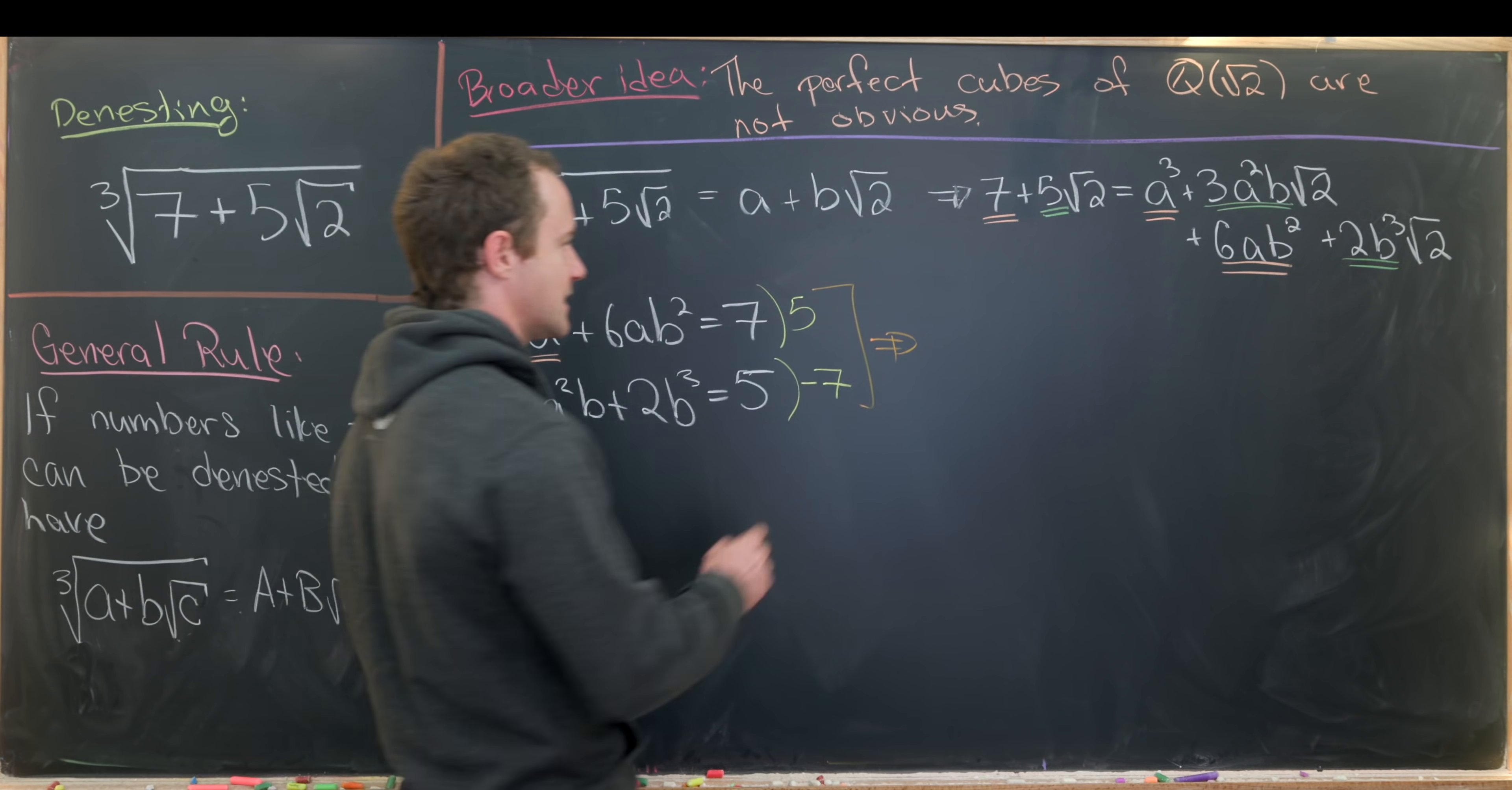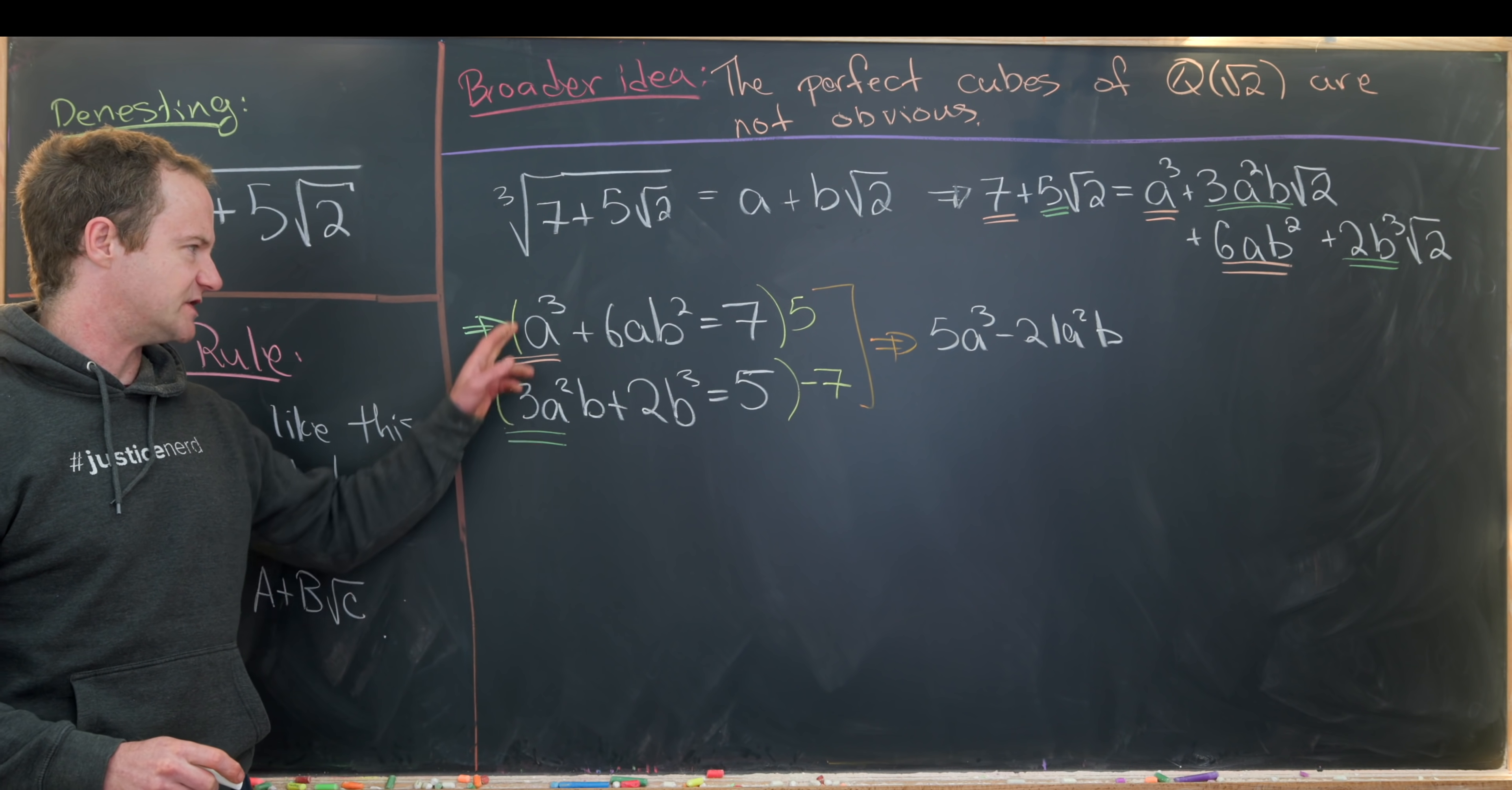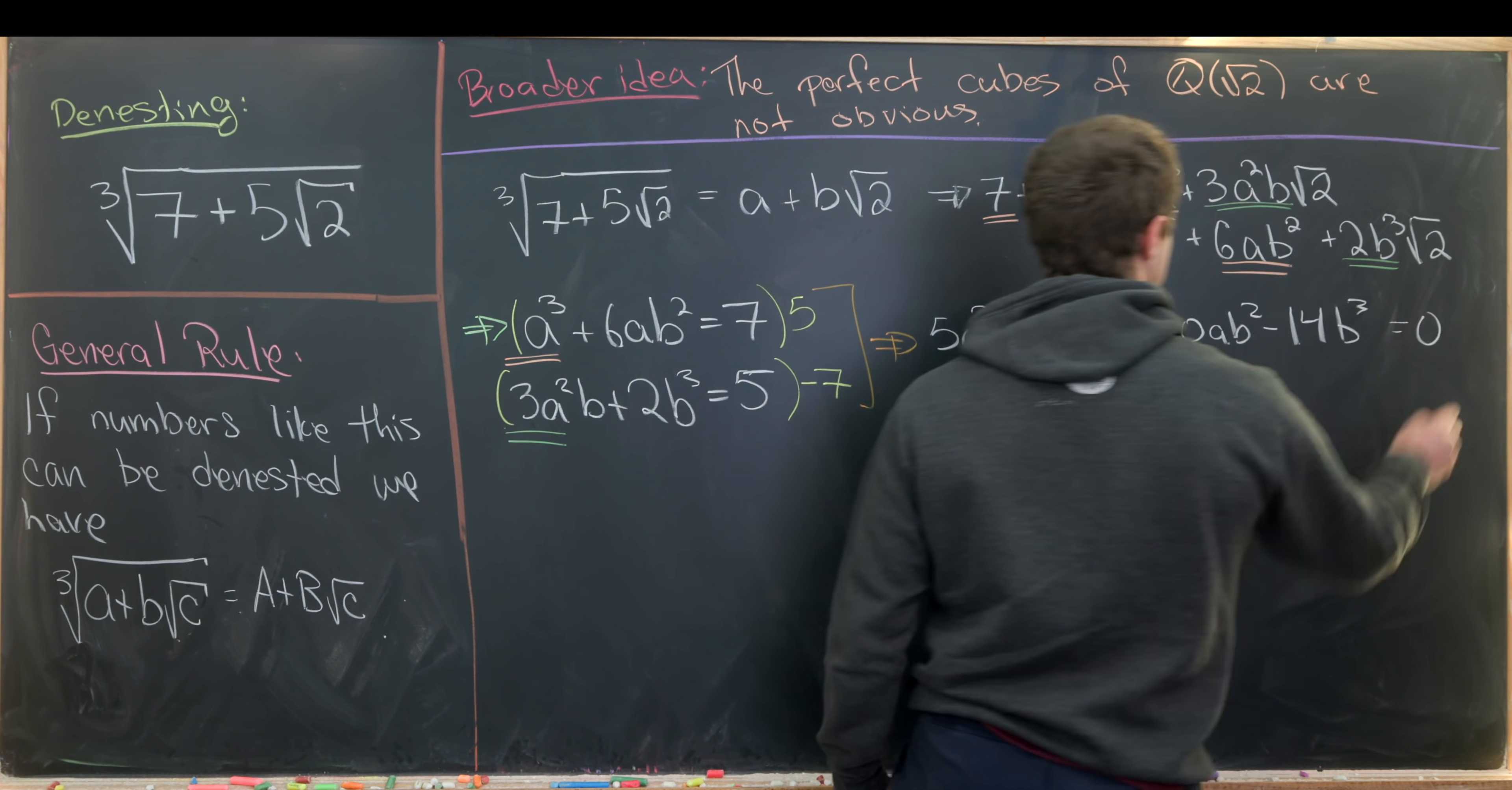So that's going to leave us with something like 5a cubed. And then next we'll have minus 21a squared b. So I'm doing it in a certain order so that I have decreasing powers of a. And then let's see plus 30a b squared. And then finally minus 14b cubed. And then we have all of that is equal to zero.